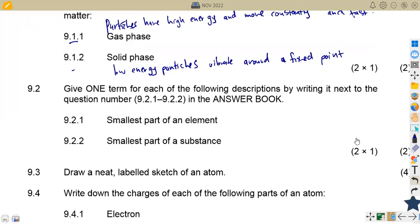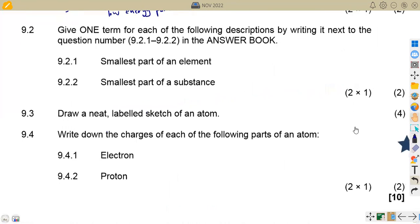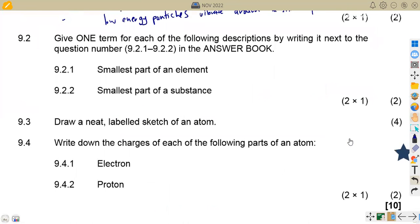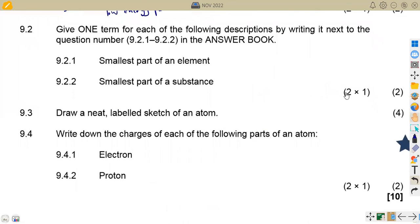9.2, we are now given a question to give one term for each of the following descriptions by writing it next to the question. 9.2.1, the smallest part of an element. What is that? That's an atom. Then the smallest part of a substance. Remember, a substance, you're now talking about a combination. So this is actually a molecule. That will be the smallest. So this one is now a molecule. Don't confuse between these two.